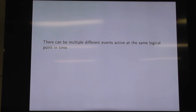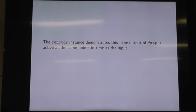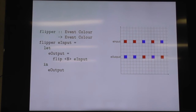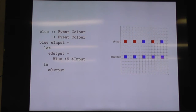There can be multiple different events active at the same logical point in time, which sounds like a contradiction. The functor instance demonstrates events happening at the same time. Here we have a flip function that changes red to blue and blue to red. We have our input along the top and we fmap flip — just flip the colours. The outputs are happening at the same logical points in time as the inputs. We can use fmap const to set things to blue. We'll do that quite a bit.